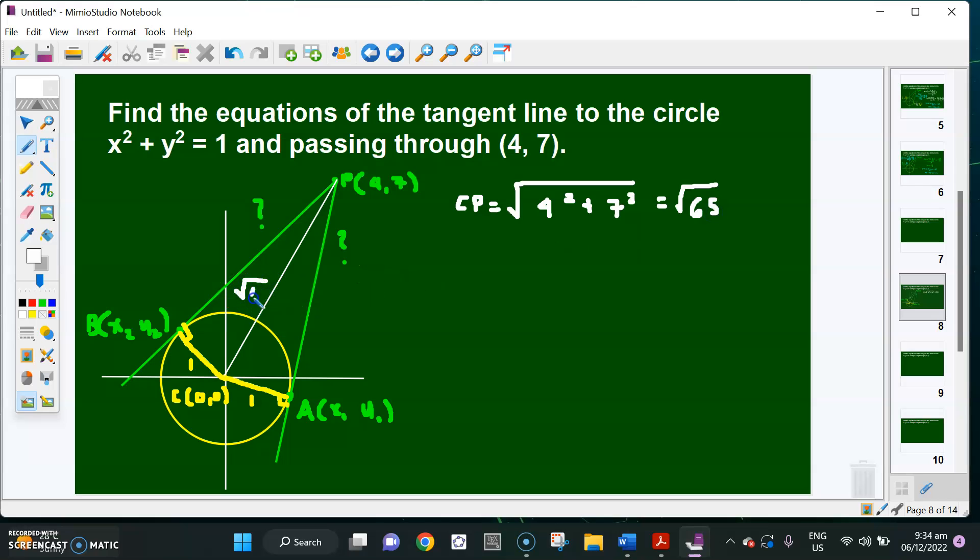Again this is square root of 65. And by Pythagorean theorem, since I have square root of 65 and the radius is 1, the AP is simply square root of CP squared minus AC squared, which is square root of 64 or simply 8. So the length of this one is 8.